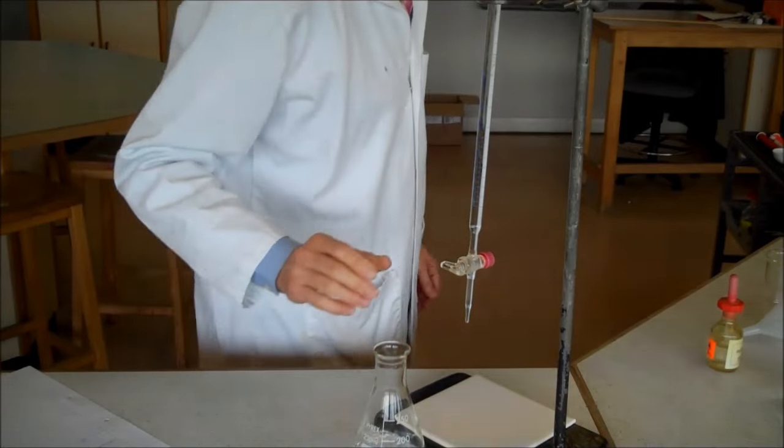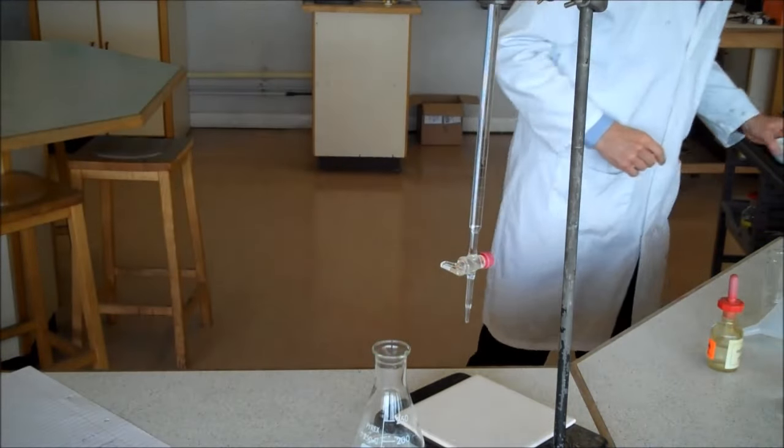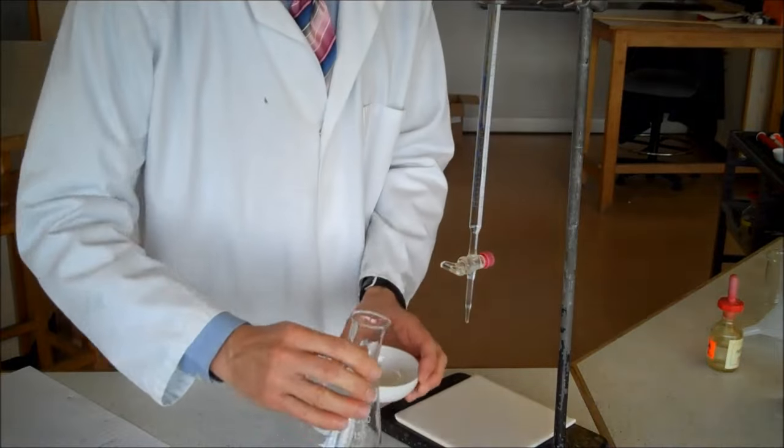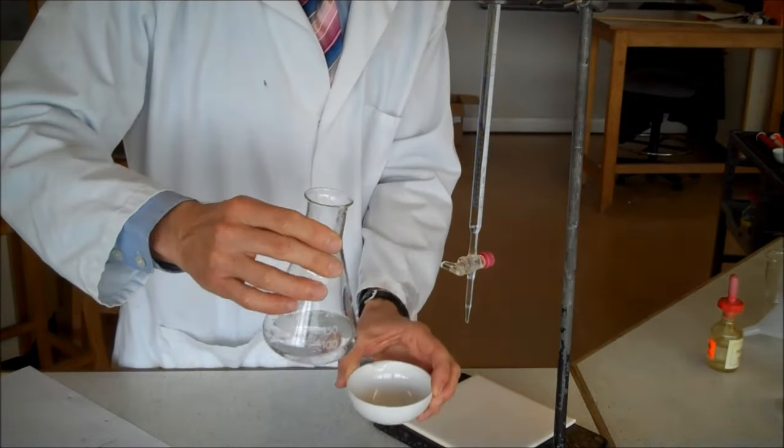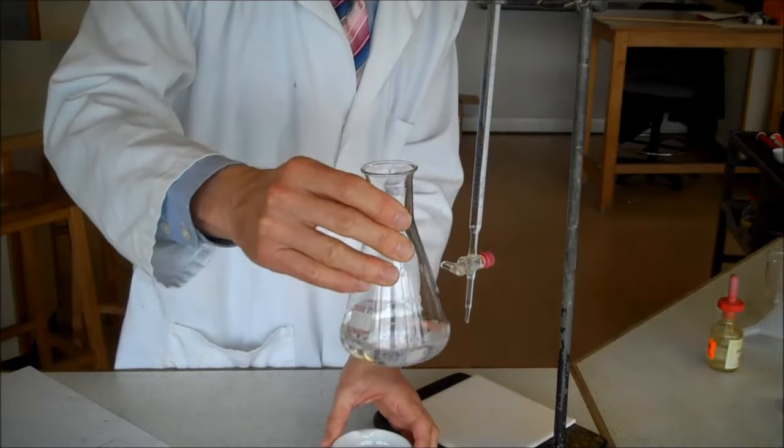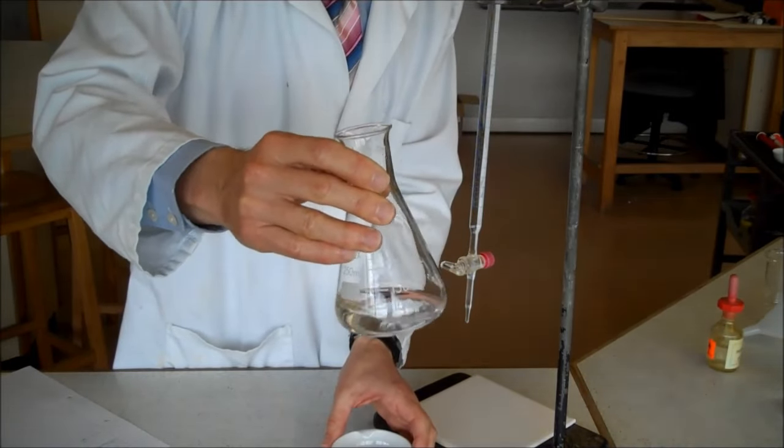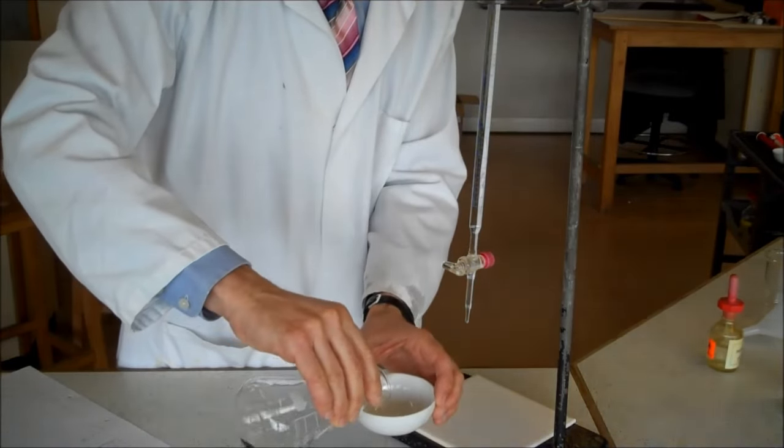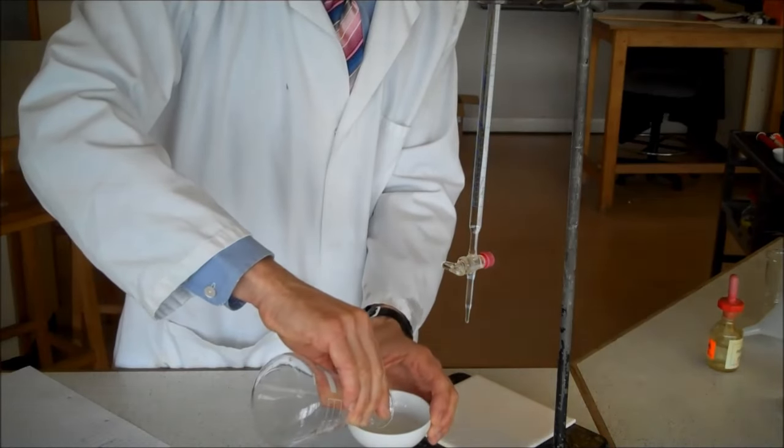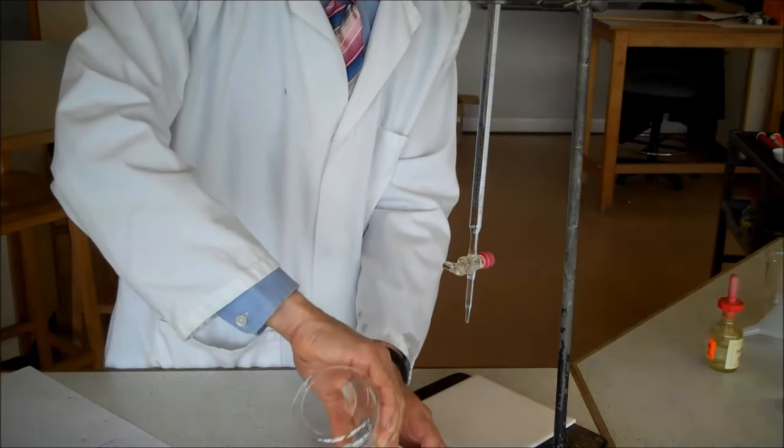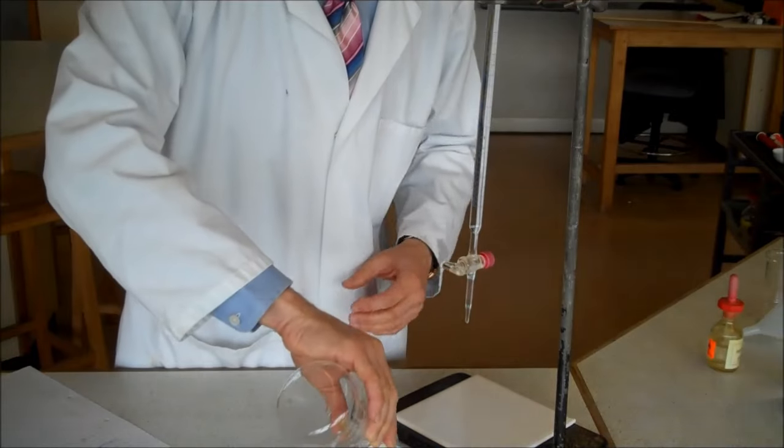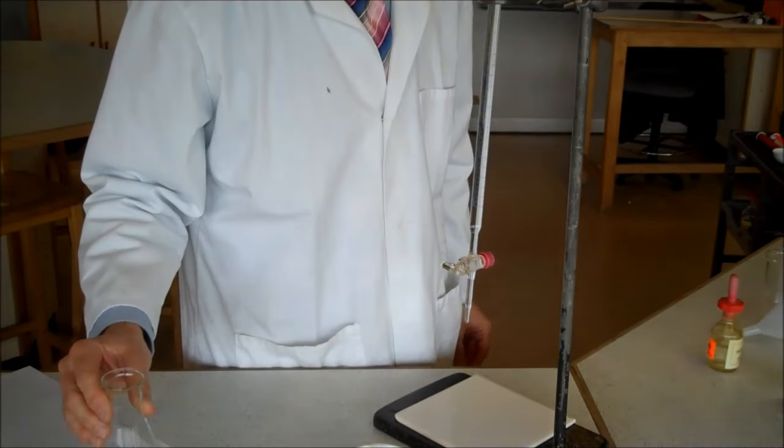Step three is we're going to evaporate off all the water. Notice the solution is completely clear. There's no need to filter this. It's completely clear. We pour it into an evaporating basin. And the last thing we want to do now is to warm up the liquid to evaporate off the water.